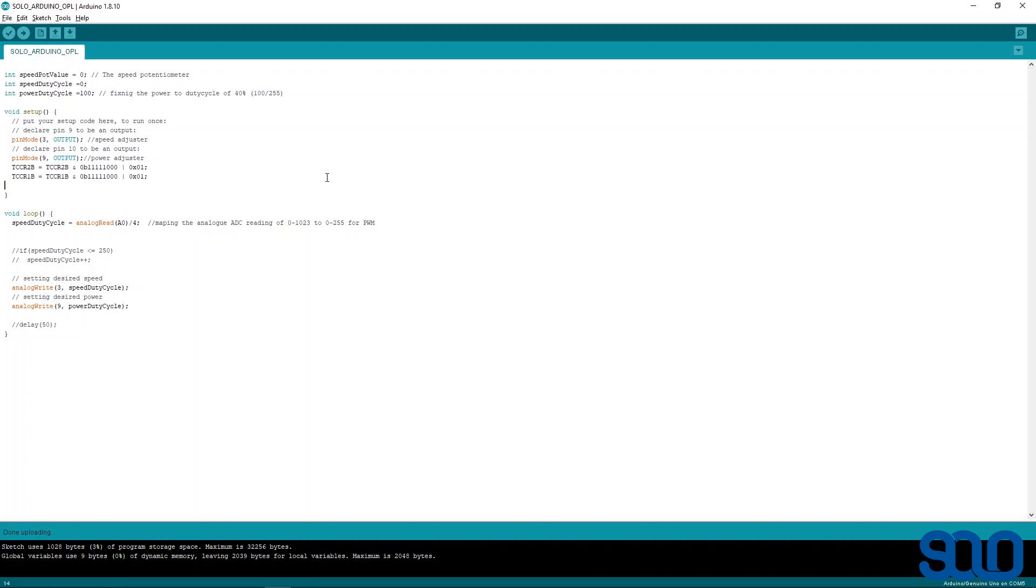But the PWM pulse width are between 0 to 255, so I'm just mapping the value from 0 to 1023 into 0 to 255 which can be fit for the PWM unit at this line. You can see that I'm sending the duty cycle through pin number 3.